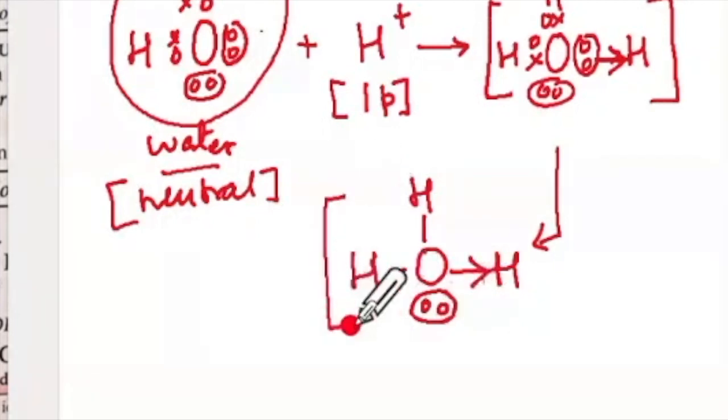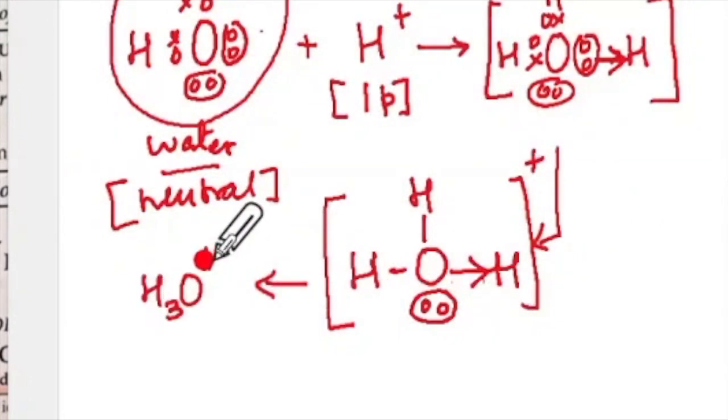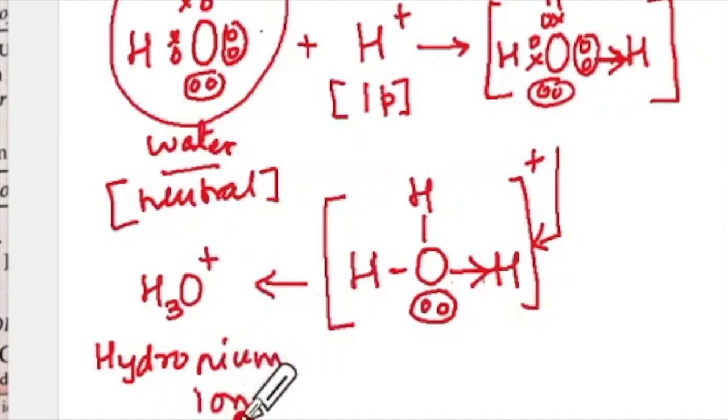And can you see this one? What is this one? Lone pair of electron is still there, and this is going to behave like this. And this is your H3O+ ion. What is this ion? Hydronium ion. Did you understand how? Which is your hydronium ion?